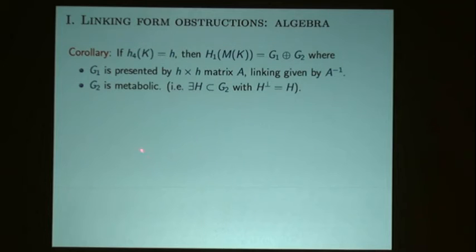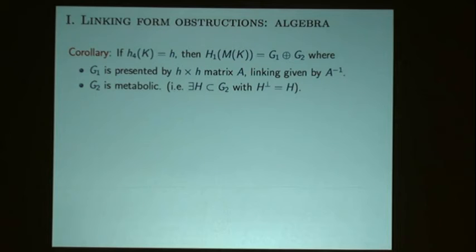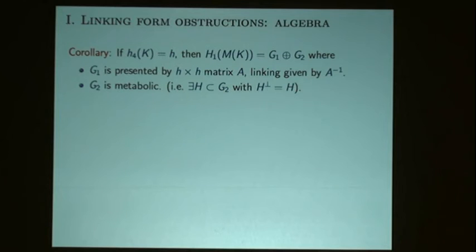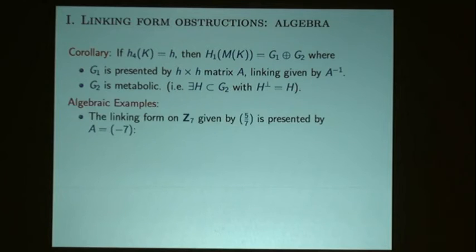The group splits into the direct sum in this way. If you haven't worked with Q-mod-Z valued linking forms, this is a little odd-looking, so I wanted to do a couple of algebraic examples.